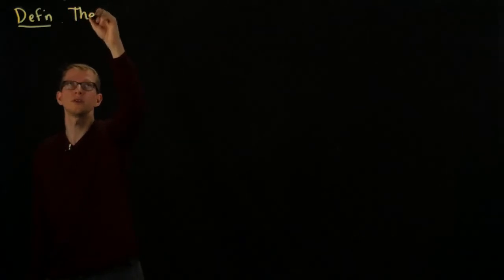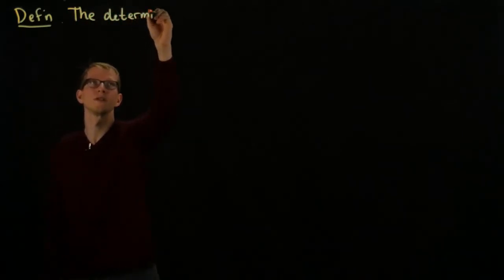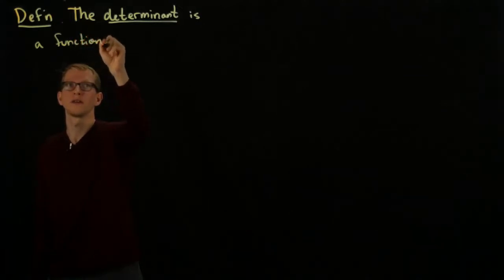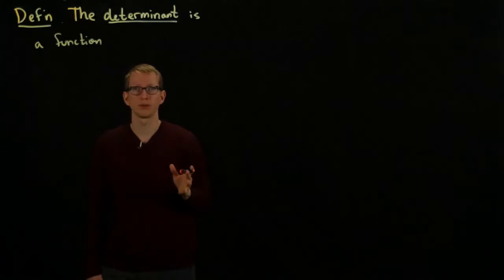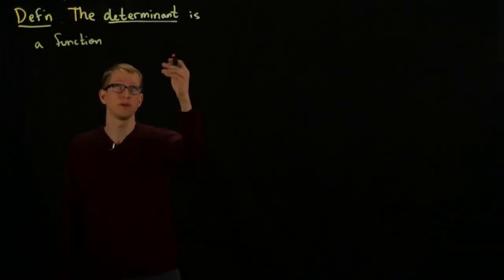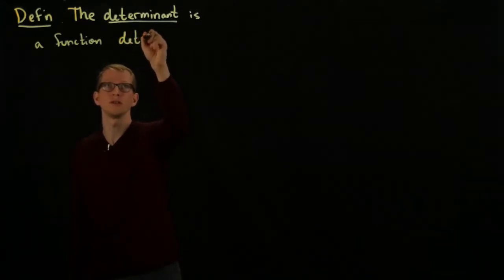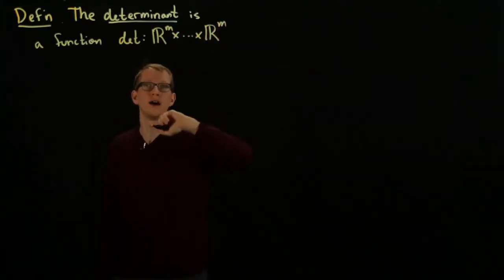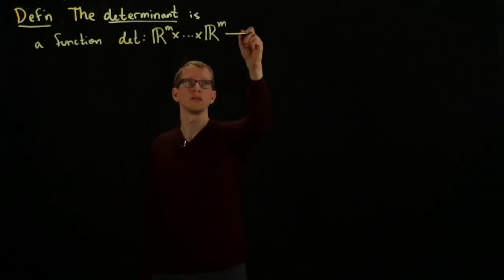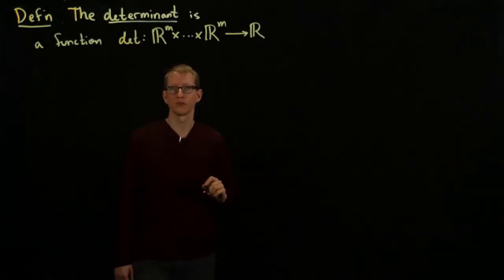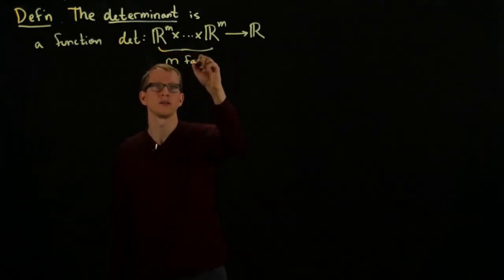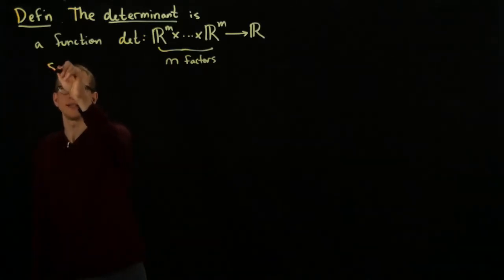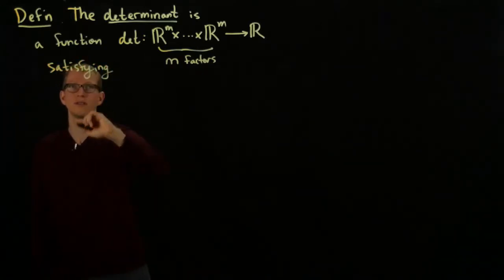The determinant is a function. Let's say we're going to deal with m component vectors. So the determinant of m component vectors is a function from an m-fold product of m component vectors into the real line, where there are m factors and each constituent is R^m. This is a theme throughout the entire course.